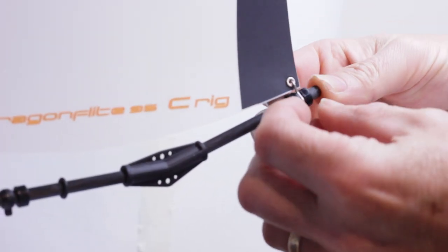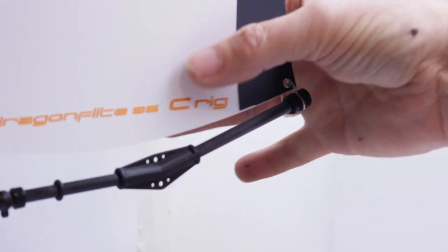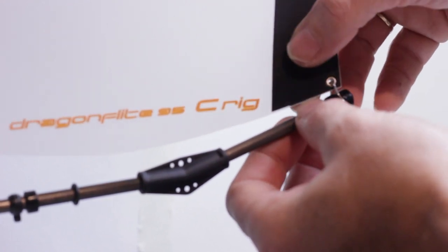Slide the clew hook and the boom bands so that the center of the foot of the sail does not push more than about 25 millimeters away from the boom. This measurement can be adjusted later.